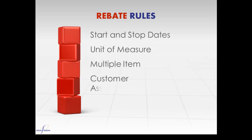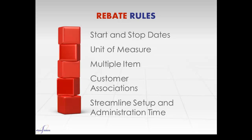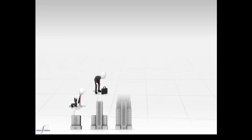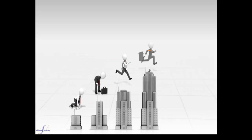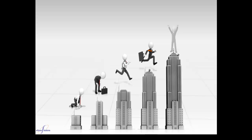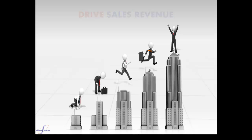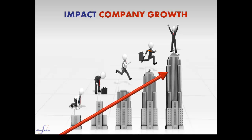Each rule can have multiple item and customer associations and can be grouped to further streamline the setup and administration time. Rules can be issued by unit or revenue volume and can have rebate tiers that allow for increased compensation as the sales volume increases. Increasing the level of compensation as higher minimums are reached can help drive sales revenue and directly impact your company's growth.